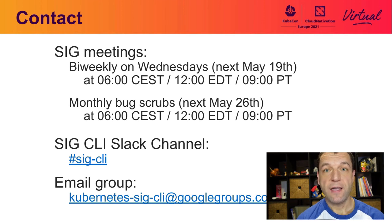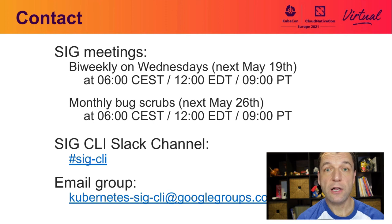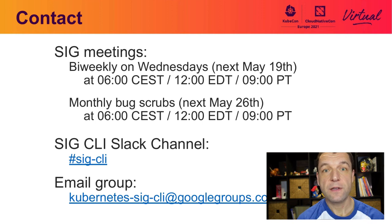This is basically all I have prepared for you today. I encourage you again to join our SIG CLI bi-weekly meetings and our monthly bug scrubs. The bug scrubs are very good for newcomers, as we go through issues and pull requests and allow newcomers to pick easy tasks to work on. Our bi-weekly meetings are a great place to raise feature requests, discuss interesting kubectl plugins, or share feedback about kubectl or any of our sub-projects. We welcome any feedback and suggestions through our SIG CLI Slack channel or our mailing group. Thank you very much for your time.